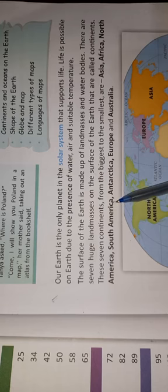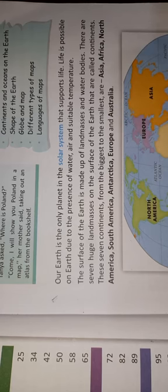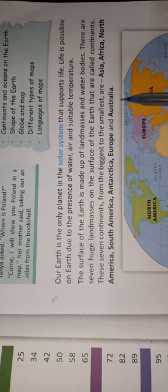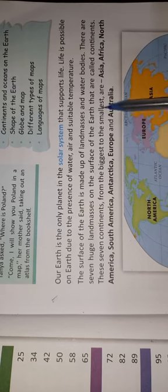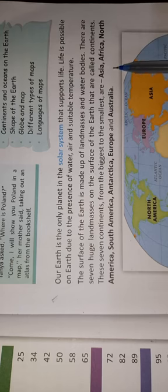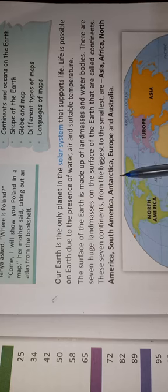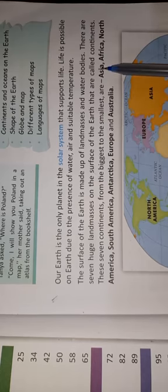These seven continents from the biggest to the smallest are: Asia, Africa, North America, South America, Antarctica, Europe, and Australia. Asia सबसे biggest continent है और Australia सबसे छोटा continent है। ये सभी continents page number 5 के map पर दिखाए गए हैं।